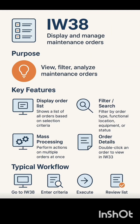Now let's look at SAP transaction IW38, one of the most useful tools in Plant Maintenance. IW38 allows you to display, filter, and manage maintenance orders in one place. You can view orders by plant, order type, or equipment, and even perform mass actions like releasing, printing, or closing multiple orders at once. Simply enter your selection criteria, execute the report, and review the list of orders. From here, double-click on any order to open detailed information in IW33. It's an excellent way to monitor maintenance progress, track costs, and ensure timely execution.